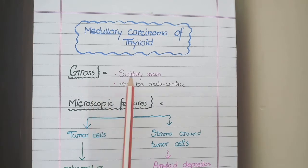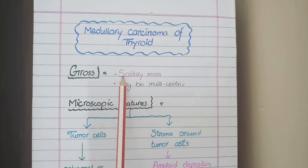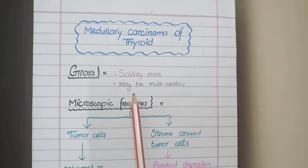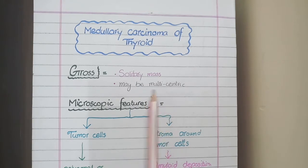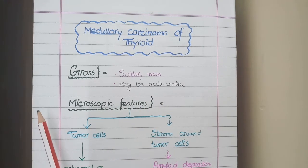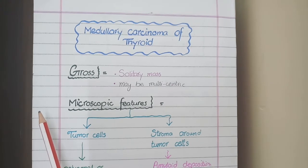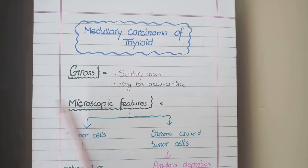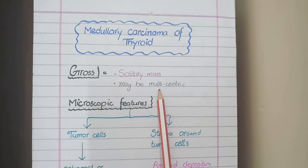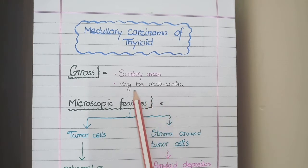On gross specimen, this appears usually as a solitary or single mass, but in familial cases there may be multicentric masses. In medullary carcinoma, there is a tendency to develop multiple masses of medullary carcinoma or C-cell hyperplasia. So due to multiple regions of hyperplasia and carcinomas, in familial cases there may be multicentric or multiple masses.